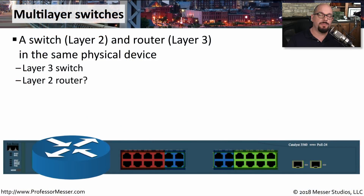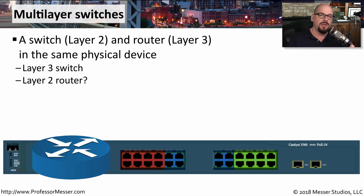A multi-layer switch can provide multiple functions on a network. It can act as a switch, forwarding traffic based on MAC addresses, but it can also act as a router, making forwarding decisions based on the layer 3 addresses passing through this device.